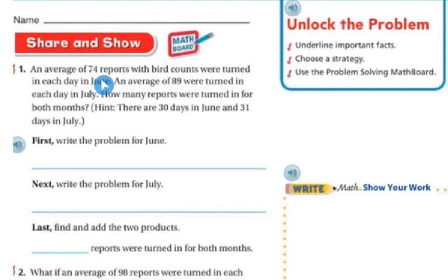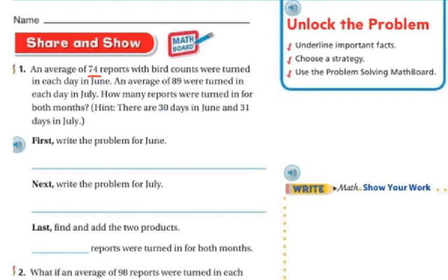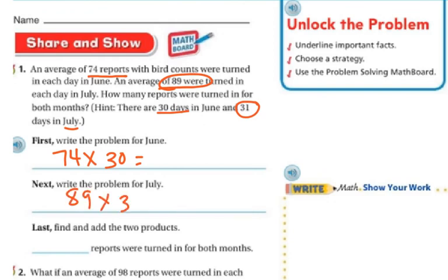Share and show. An average of 74 reports with bird counts were turned in each day in June. An average of 89 were turned in each day in July. How many reports were turned in for both months? Hint: there are 30 days in June and 31 days in July. In June, there are 30 days and 74 reports, so 74 times 30 gives me my June total. For July with 31 days and an average of 89, I do 89 times 31 for my July total. Once I solve both, I add them together to get the total.